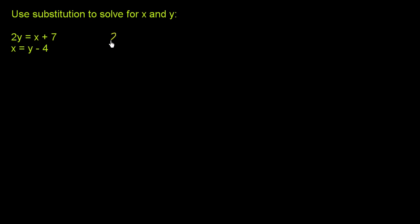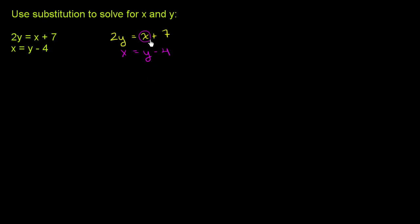Let me rewrite this first equation: 2y is equal to x plus 7. And we have the second equation that x is equal to y minus 4. If we're looking for an x and y that satisfies both constraints, both of these constraints have to be true. So x must be equal to y minus 4. Anywhere in this top equation where we see an x, that x by the second constraint has to be equal to y minus 4, so everywhere we see an x, we can substitute it with y minus 4.